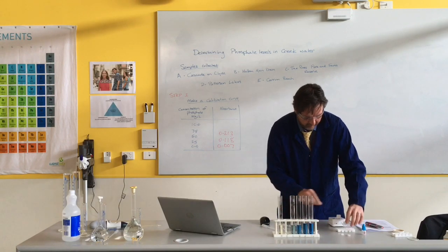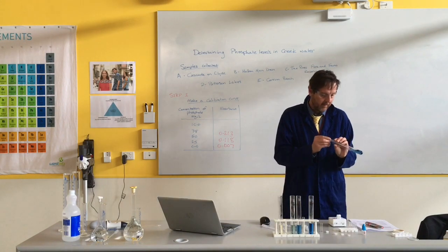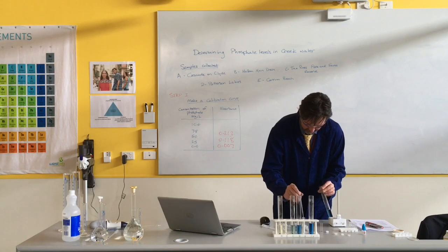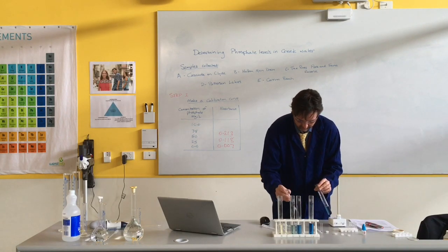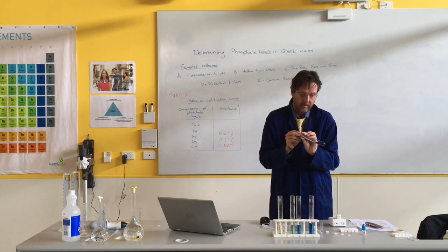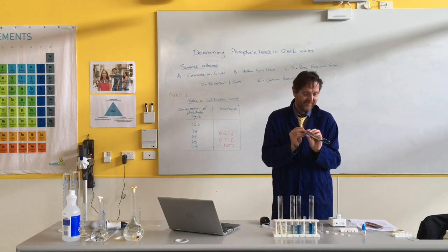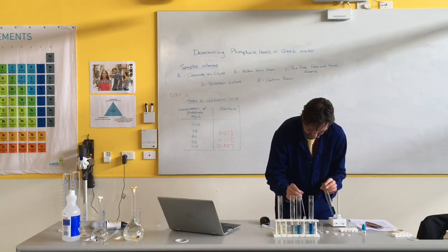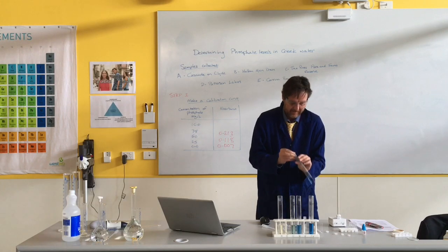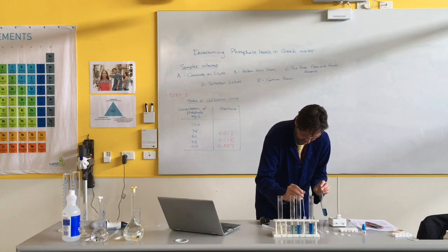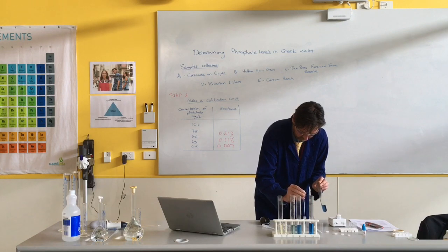Next one is the 7.5. Once again, bluer again. Hopefully we're going to see that it's got a higher absorbance. So we're looking for a number bigger than 0.3. Again with the drop in.